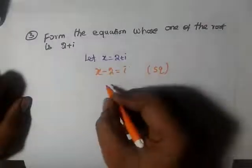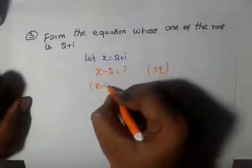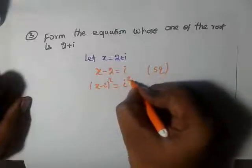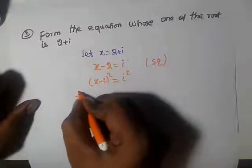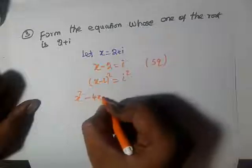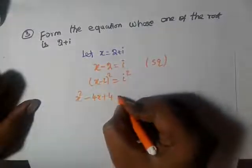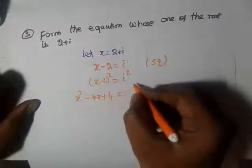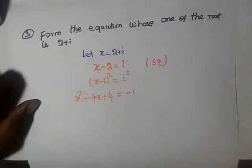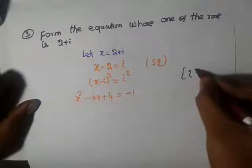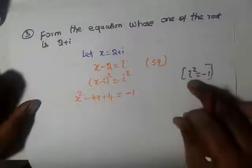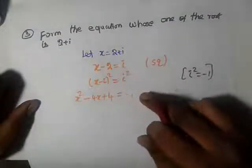Squaring both sides: (x minus 2)² equals i². Expanding the left side using (a minus b)²: x² minus 4x plus 4 equals i². Now the formula — i² value is minus 1, so i² equals minus 1 in complex numbers.